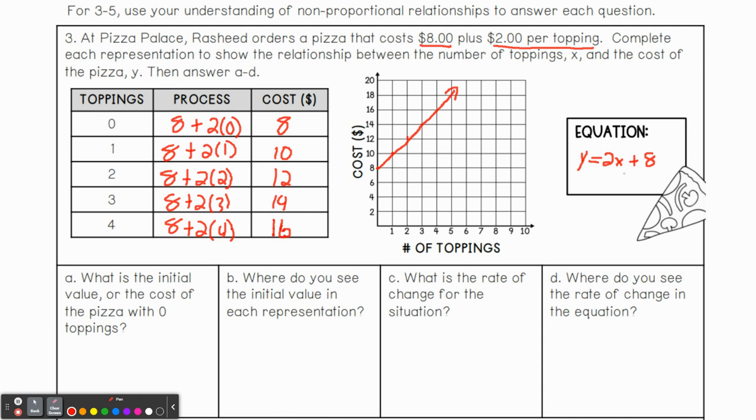Now letter A asks, what is the initial value or the cost of pizza? We said this already, it's $8. We're going to pay $8 for a pizza regardless of, well, if there's zero toppings, right? $8. So where do you see the initial value in each representation? Well, let's distinguish between the two different things. So we have a graph and we have an equation.